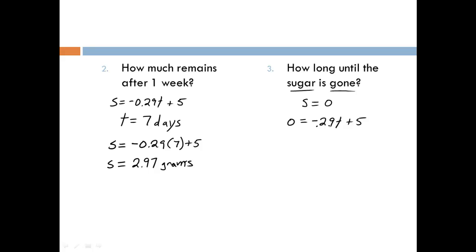And solving linear equations algebraically is pretty easy. We need to get the t by itself, and in this case, since it's negative, I'm going to go ahead and add the t term to both sides. So we end up getting that 0.29t, now positive, is equal to 5, and to get t by itself, we need to divide both sides of the equation by 0.29, so on the left side they cancel out, and we're left with t equals 17.24 days.